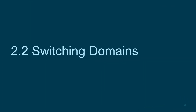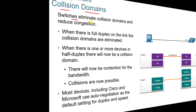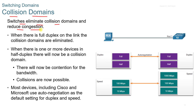2.2 Switching Domains. Switches eliminate collision domains and reduce congestion. With full duplex on a link, collision domains are eliminated. When one or more devices operate at half duplex, a collision domain exists, creating contention for bandwidth and making collisions possible. Most devices, including Cisco and Microsoft, use auto negotiation as the default setting for duplex and speed.